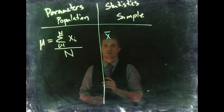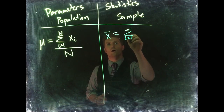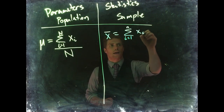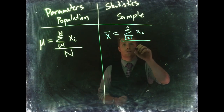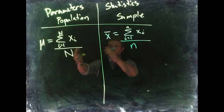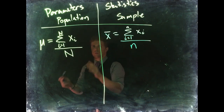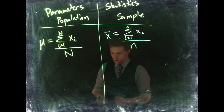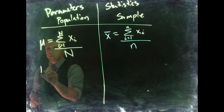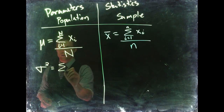Most of the time we don't know all the population values — we don't have enough time to measure every single tree — so we go out and take a sample. From our sample we talk about the mean in terms of x-bar. This equals the sum from i equals 1 to little n of all our sample measurements divided by our sample size n. This shows the difference between the calculations for our population parameters and our sample statistics.